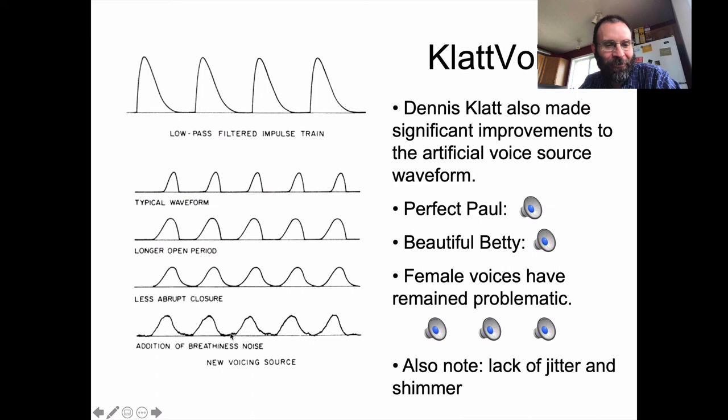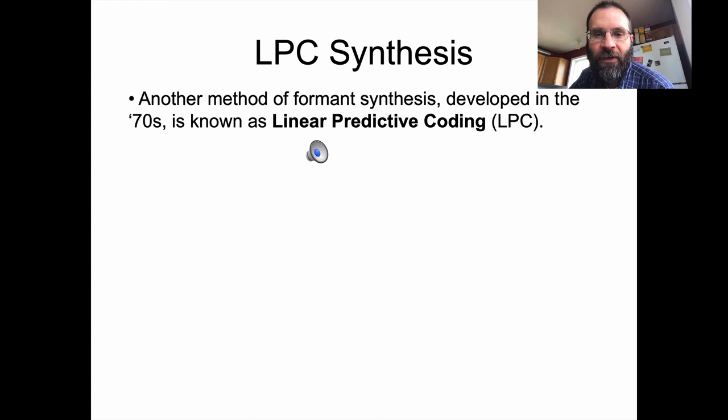Jitter and shimmer are things you want to include in your voice source waveforms to make them sound a little more natural, because people are just not electronically perfect. Another form of formant synthesis developed in the 70s is known as linear predictive coding (LPC) — I'm calling it formant synthesis, but it works in a slightly different way. It's still around — it's actually part of how Praat generates synthetic speech.